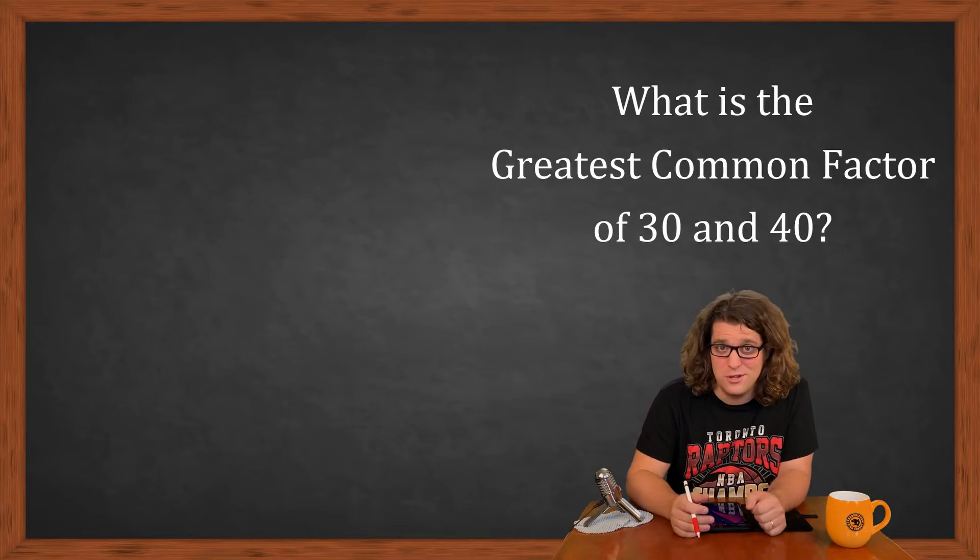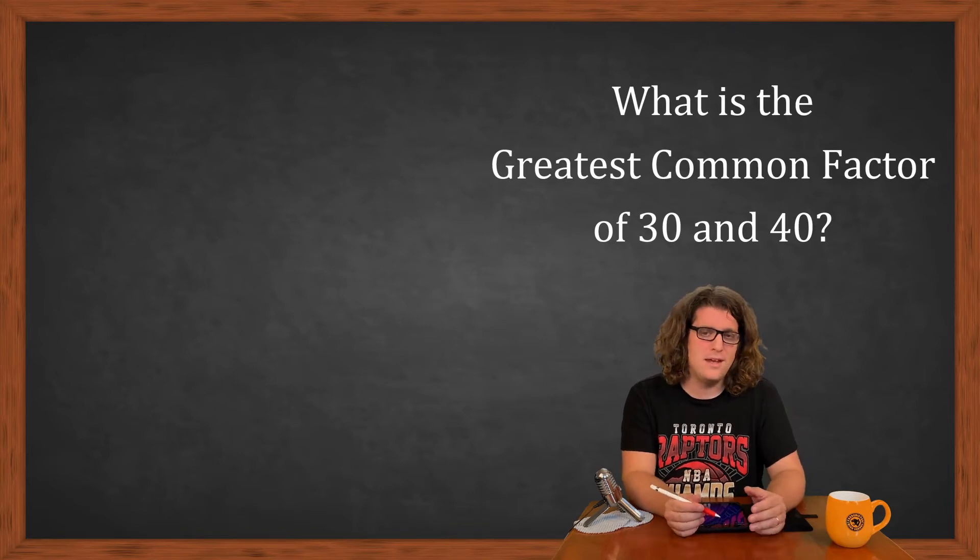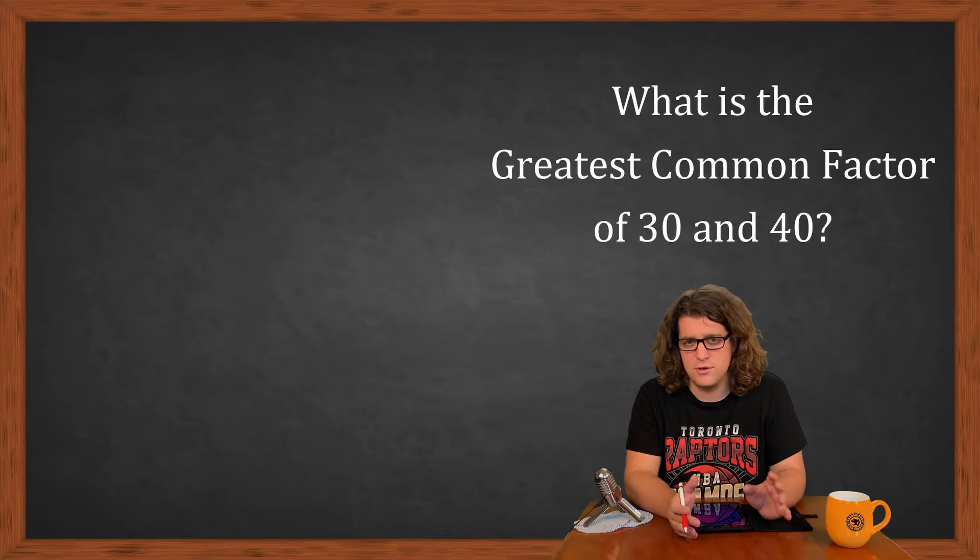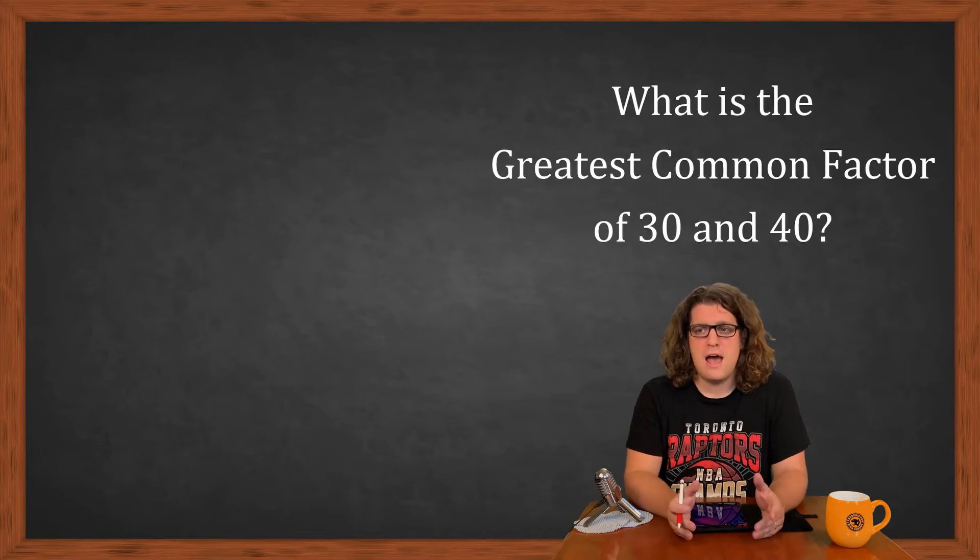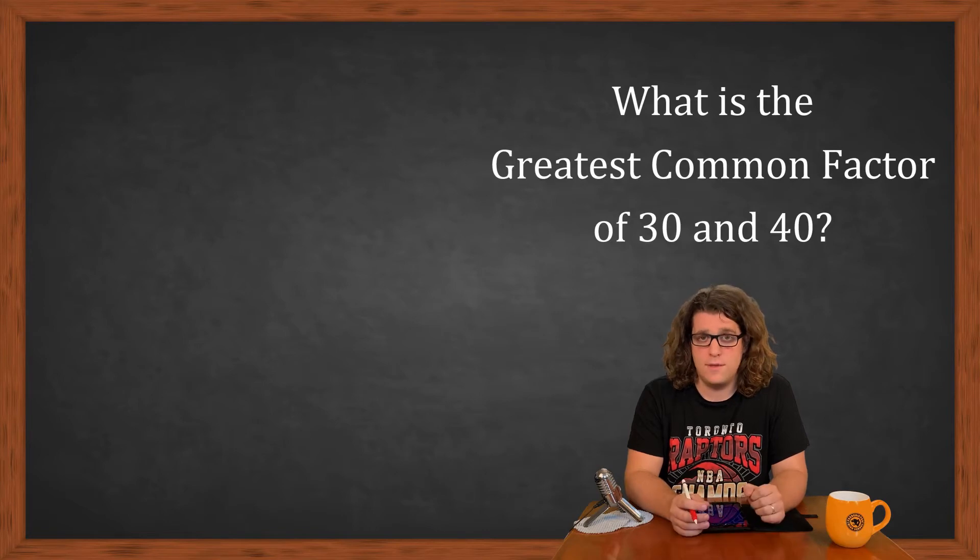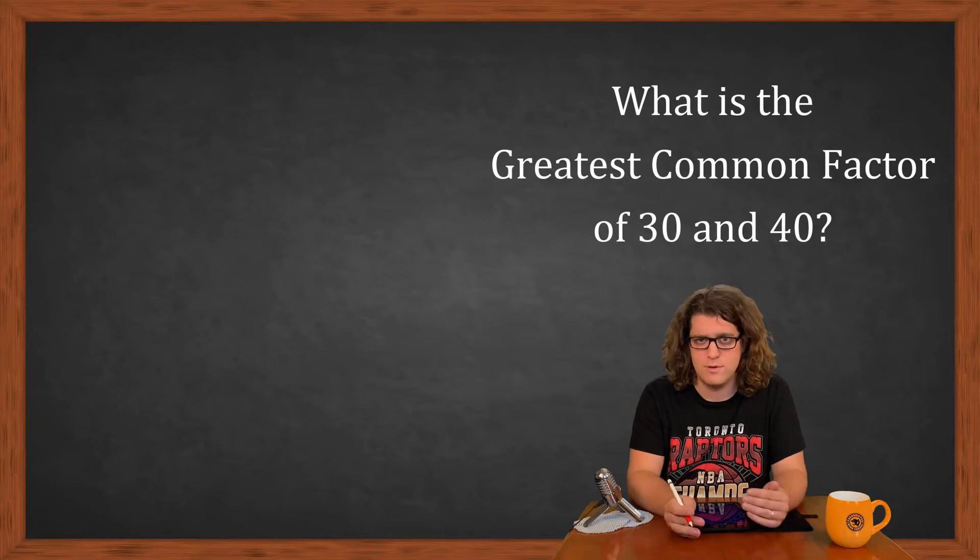All right, so the two numbers that we're going to take a look at are the numbers 40 and 30 and we're going to take the greatest common factor between those two. Now before I get into that I'm going to show you something and I'm going to use 30 as the example: how to get all the factors of 30 if you've already done the prime factorization of 30. This is something you may already know or you might not know, and if you don't that's what's going to be important.